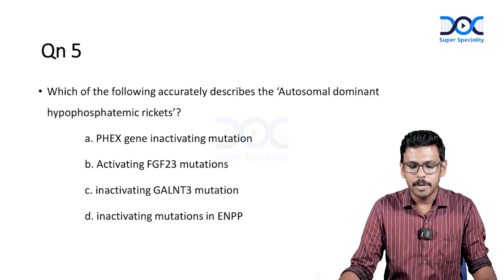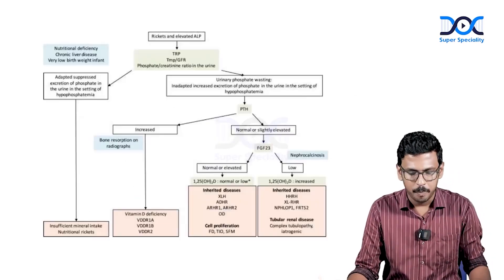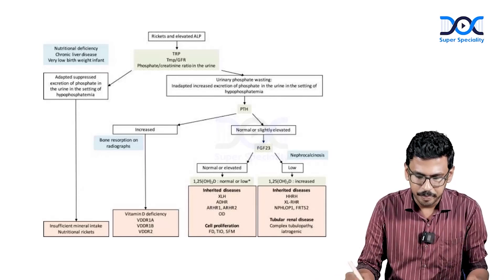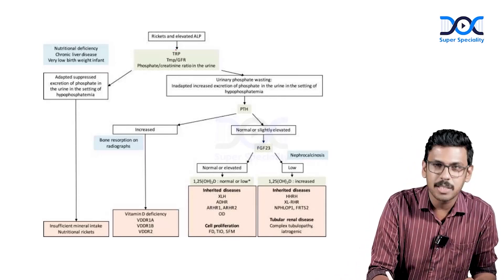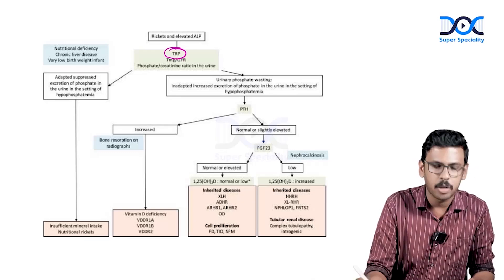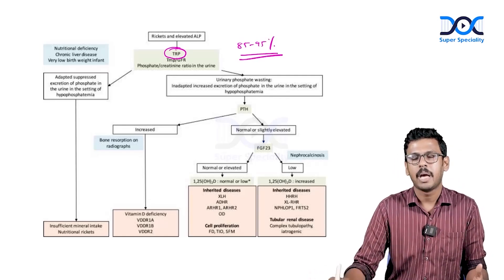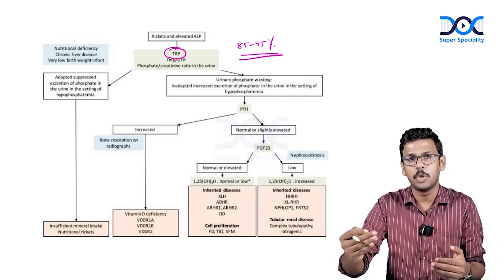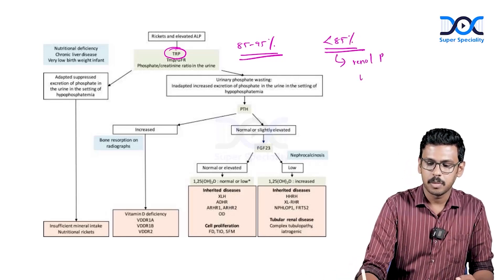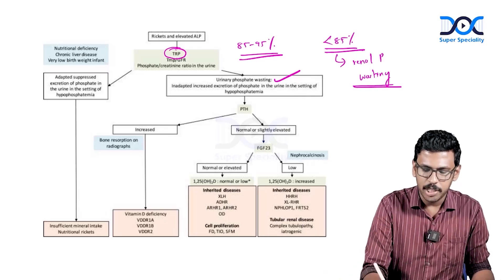Question five: which of the following accurately describes autosomal dominant hypophosphatemic rickets? When suspecting renal phosphorus wasting in the setting of hypophosphatemia, start with tubular reabsorption of phosphate (TRP). At least 85–95% of phosphorus is normally reabsorbed from the kidney; in hypophosphatemia, renal reabsorption is expected to be even higher. Less than 85% TRP indicates renal phosphorus wasting.